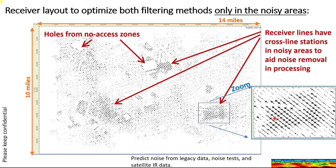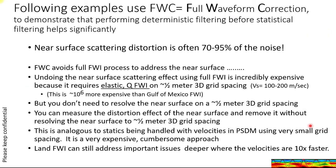The idea is we're not abandoning perpendicular source and receiver lines — we're working with them, but just enhancing them where need be. The following examples use full waveform correction, FWC, which is our method for performing deterministic filtering to correct for scattering distortion.